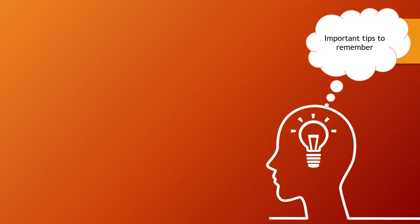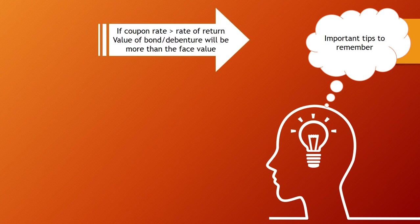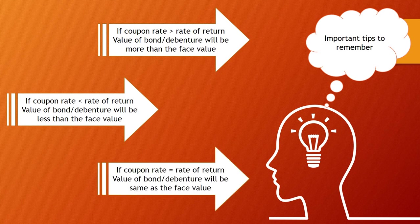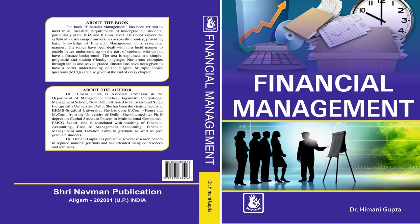To summarize the important tips: First, if the coupon rate is more than the rate of return, the value of the bond will be more than the face value. Second, if the coupon rate is less than the rate of return, the value of the bond will be less than the face value — as we proved in this example with 0% coupon and 8% return giving Rs. 463. Third, if the coupon rate equals the rate of return, the value of the bond will equal the face value. For further reference and more numericals, you can refer to the book Financial Management. Thank you.